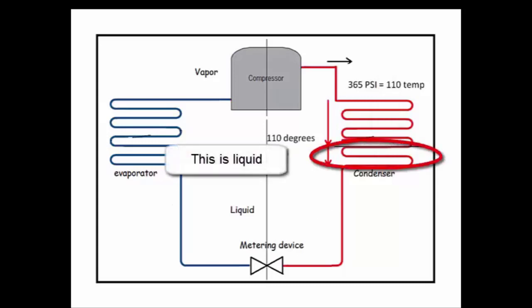Once it hits that black line, it's now all liquid. There's no vapor left. And from there to the bottom of the condenser, it will continue to give off heat and it gives off sensible heat. This liquid stacks up in the bottom of the condenser, waiting to exit the condenser and return to the evaporator via the liquid line.